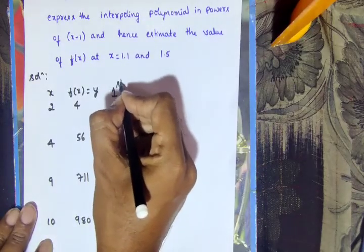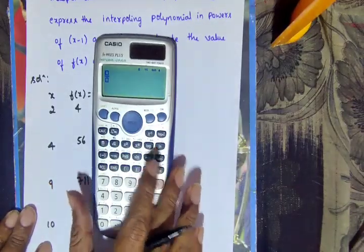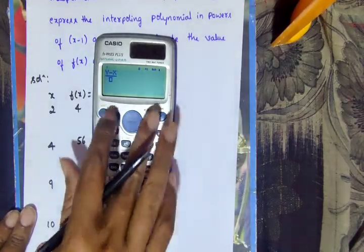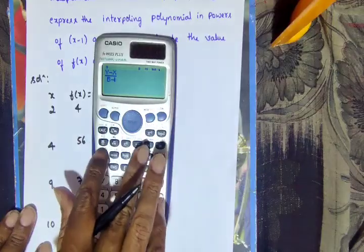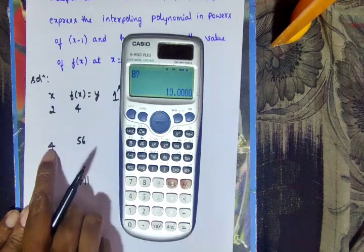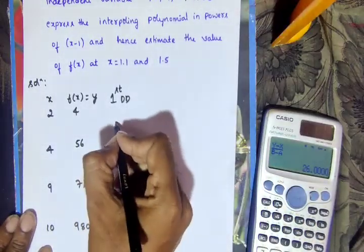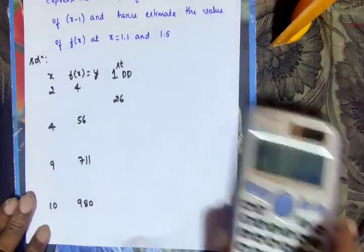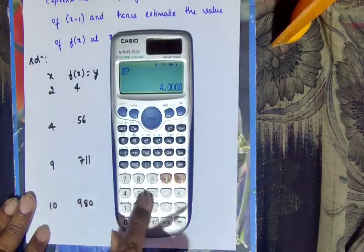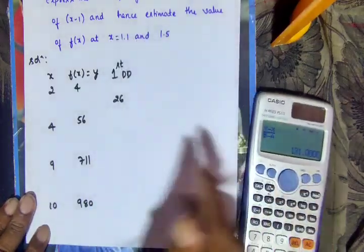First divided difference formula: [a,b] = (f(b) - f(a)) / (b - a). For x=2 and x=4: y is 56, x is 4, b is 4, a is 2 — result is 26. For x=4 and x=9: y is 711, x is 56, b is 9, a is 4 — result is 131.